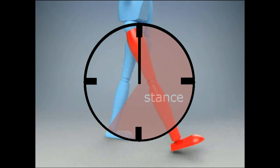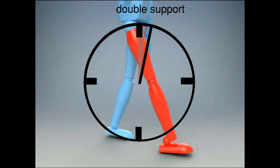Stance can be further separated into phases. Initial contact is the first 2% of the gait cycle until we reach double support, which is when both limbs are supporting the body weight.